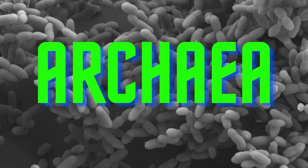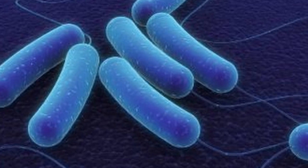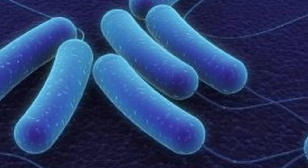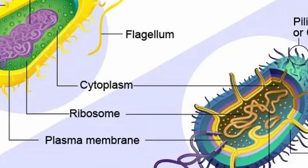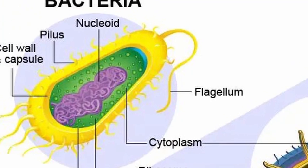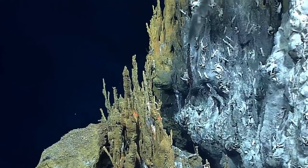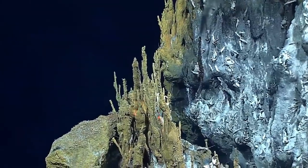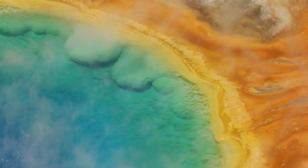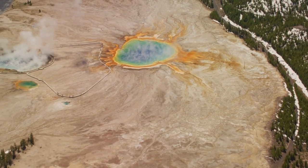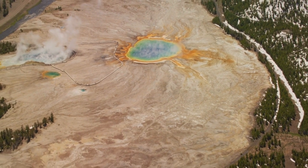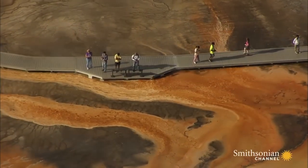We'll start with archaea. Archaea are single-celled organisms in the domain of archaea. They used to be known as archaebacteria, but these organisms have distinct characteristics that distinguish them from bacteria. Many archaea species are known as extremophiles, meaning they live in extreme environments, like the acidic, boiling grand prismatic hot springs of Yellowstone National Park. Each of the different colors of green, orange, and yellow you see are different species of archaea.